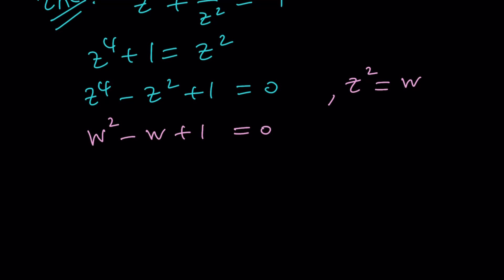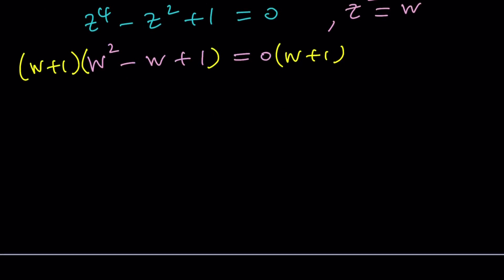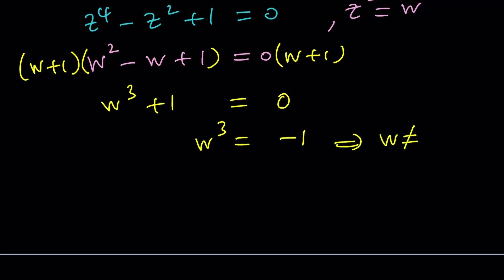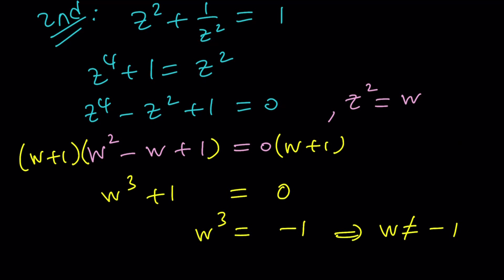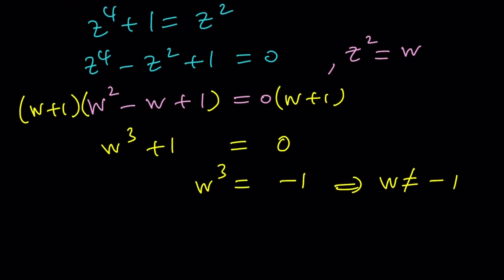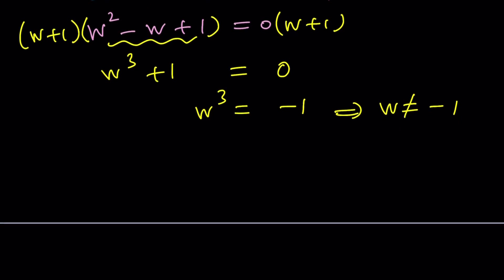The roots of this quadratic should be familiar. If not, multiply both sides by (w + 1). On the left-hand side you get w³ + 1, and on the right-hand side zero. This means we're looking for a number whose cube is negative one. Now w does not equal negative one — if it were, we'd find two other cube roots of negative one for a total of three roots, but we need only two roots for w since this is quadratic. So w ≠ −1. From here, we can find the solutions using the cube roots of negative one.